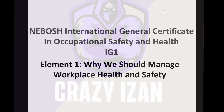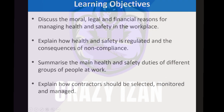Today we're going to start the first element of Unit 1. Unit 1 has four elements in total. Elements 1, 2, and 4 are brief, but element 3 is very detailed and long, so we'll spend more time on that. Today's element discusses the reasons for managing health and safety, and the title of this chapter is 'Why We Should Manage Workplace Health and Safety.'